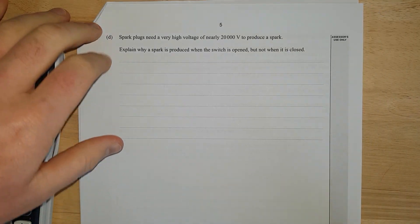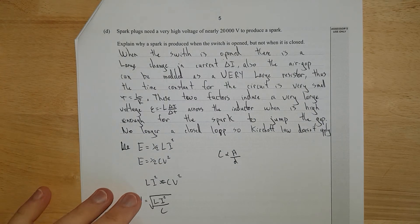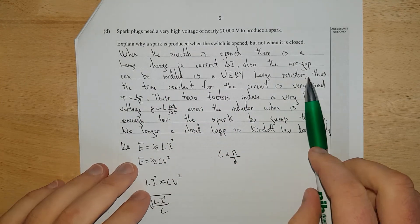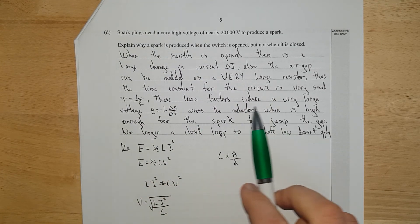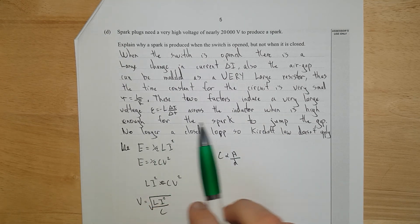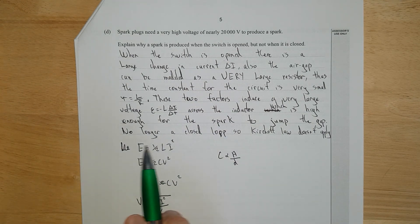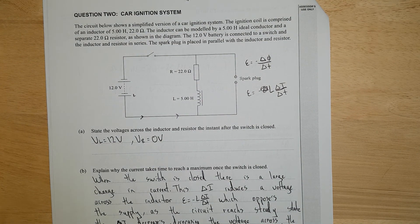I'll just write up the full answer and then discuss it. So I've said when the switch is opened, there is a large change in current, delta I. Also, the air gap can be modeled as a very large resistor, thus the time constant for the circuit is very small, T equals L over R. These two factors induce a very large voltage, E = -L dI/dt, across the inductor, which is high enough for the spark to jump the gap. I'm putting this here because it's in the answer schedule: no longer a closed loop, so Kirchhoff's law doesn't apply. That's not true. This is a closed loop.